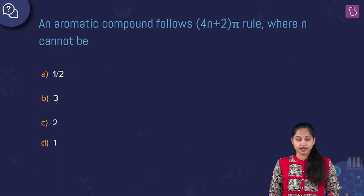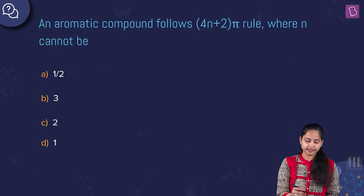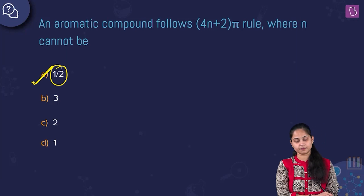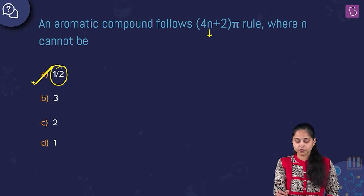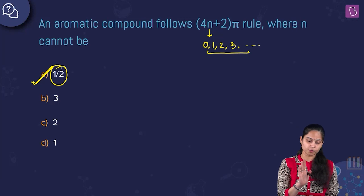An aromatic compound follows the 4n+2 pi rule, where n cannot be a fraction value. N ranges between 0, 1, 2, 3 and so on — it cannot be a fraction value. Therefore option A is the right answer.